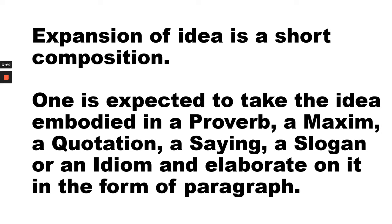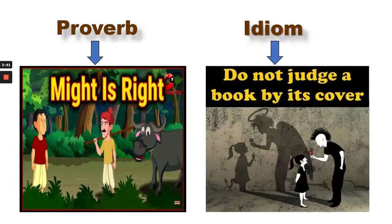Here, some words are used like proverb, maxim, quotation, and idiom. A proverb is a simple and traditional saying that expresses a perceived truth based on common sense or experience — proverb means kahawat. For example, 'might is right' — this is one of the proverbs. Jo taakatwar hota hai, ushi ki baat maanni padati hai.